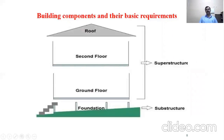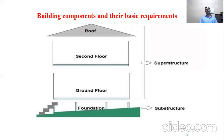Building components consist of two main parts. One is the substructure — the structure below the ground. The other is the superstructure, which consists of the first floor, second floor, roof, beams, and columns. Doors are included in the superstructure. You are observing the components in this diagram.